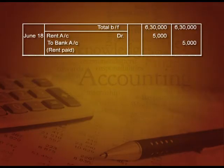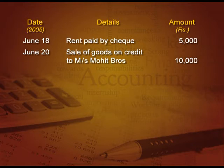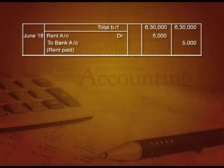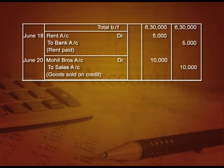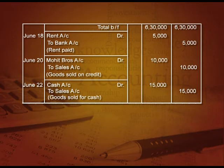Fifth: rent paid by cheque — rent account debit to bank account. In the rent account, we write 'To Bank', and in the bank account 'By Rent'. Sixth: sale of goods on credit to Mohith Brothers ₹10,000 — Mohith Brothers account debit to sales ₹10,000. In Mohith account 'To Sales ₹10,000' and in the sales account 'By Mohith Brothers ₹10,000'. Seventh: cash sales ₹15,000 — cash account debit to sales ₹15,000. In the cash account 'To Sales ₹15,000' and in the sales account 'By Cash ₹15,000'.